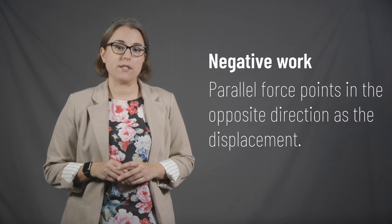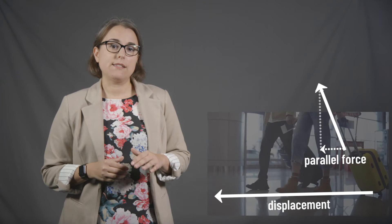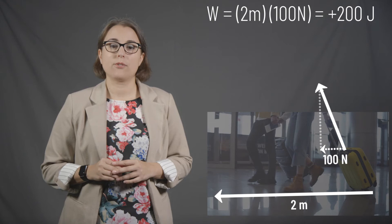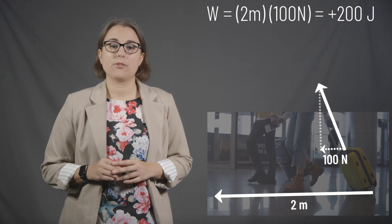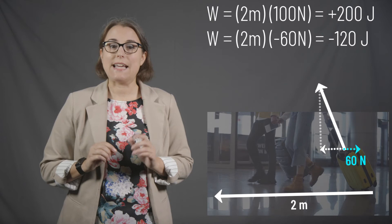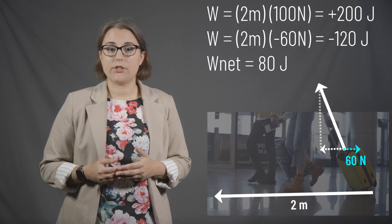Going back to the rolling suitcase: if the traveler exerts 100 newtons of parallel force pulling the suitcase a distance of 2 meters, the work done is 200 joules — positive. If there are 60 newtons of friction opposing the motion, friction does 120 joules of negative work. The net work done on the suitcase is 200 joules minus 120 joules, which equals 80 joules.